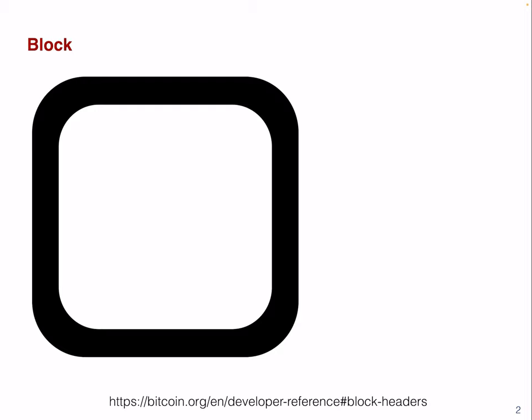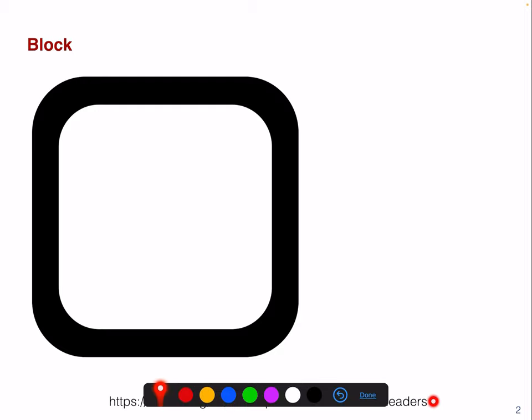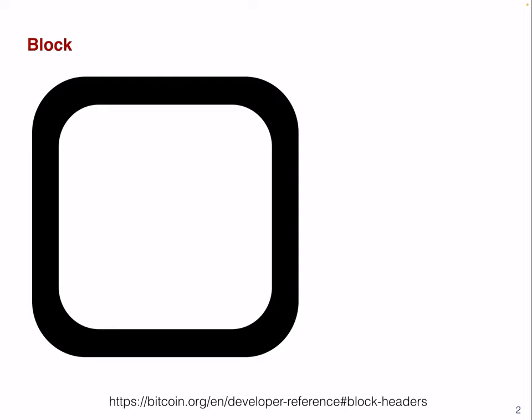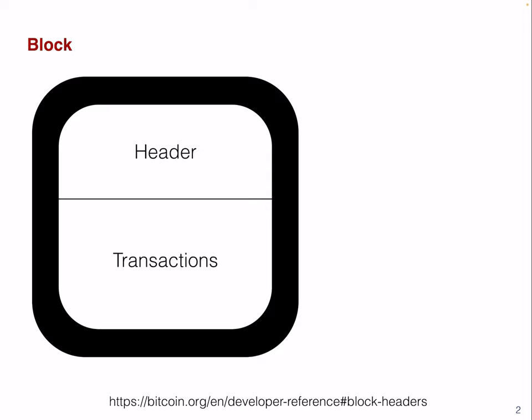I'm happy to refer you here to the official Bitcoin developer reference. Basically, this block is made up of a header that contains 80 bytes of data in the Bitcoin block, and then a list of transactions. That's it, as simple as that.